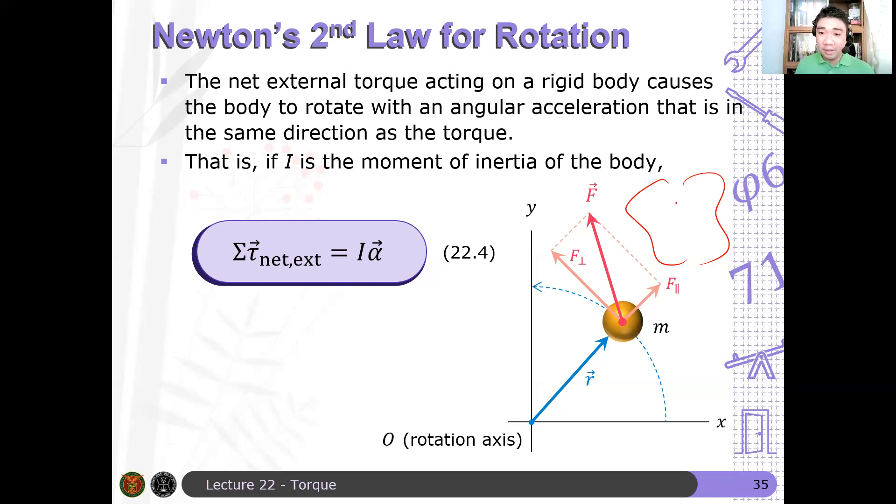For one reason is this. Pwede mong isipin na yung rigid body are composed of different particles. And all of these particles will experience the same angular acceleration. So, if there is a net external torque, pwede mong isipin niya na system of particles yan. And since ang system of particles, hindi naman importante sa kanya yung internal forces. You can also use the same derivation for any given particle in the rigid body. And you will get the same expression. Ang mangyayari lang mag-a-add yung mga moments of inertia ko. But same lahat yan ang angular acceleration.